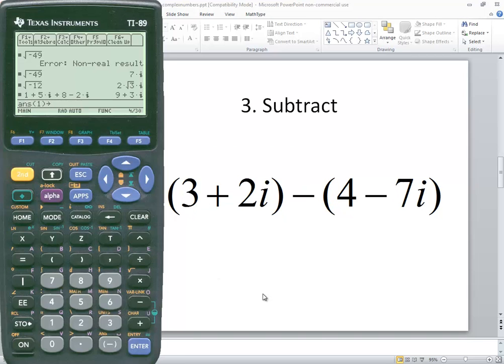Now subtraction. I'll do a beginning parentheses 3 plus 2, second catalog for the i, closing parentheses minus beginning parentheses 4 minus 7, then second catalog for the i and then closing parentheses and then press enter.